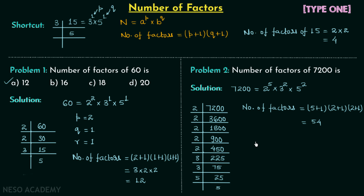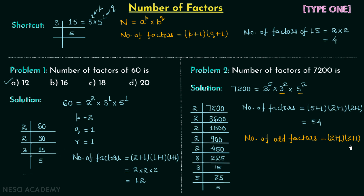Now we discuss an important concept: finding the number of odd factors of a given number. To find the total number of odd factors, we focus only on the odd prime numbers. For 7200, the odd prime numbers are 3 and 5, with powers 2 and 2 respectively. So the number of odd factors = (2 + 1) × (2 + 1) = 3 × 3 = 9. Out of 54 total factors, 9 are odd.